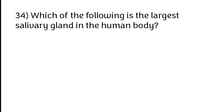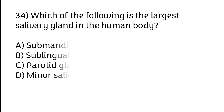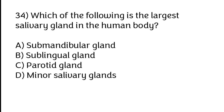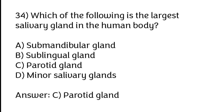Which of the following is the largest salivary gland in the human body? Options: A) Submandibular gland, B) Sublingual gland, C) Parotid gland, D) Minor salivary gland. The correct answer is option C, parotid gland.